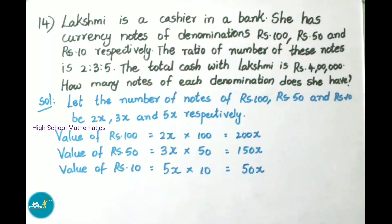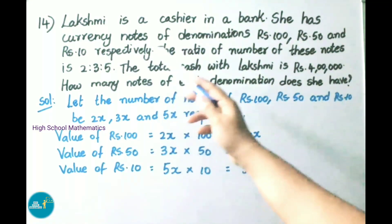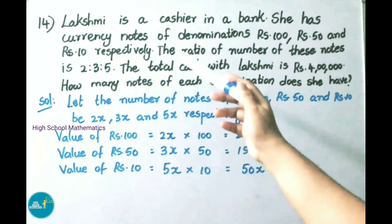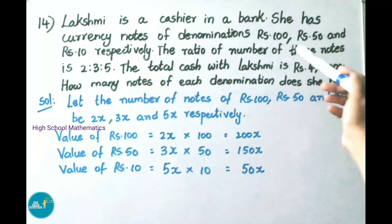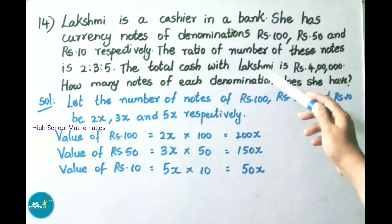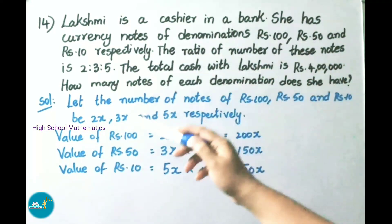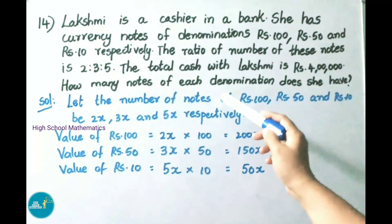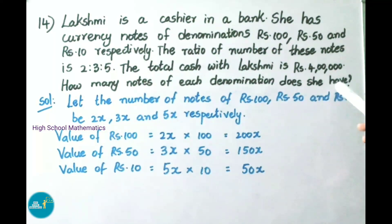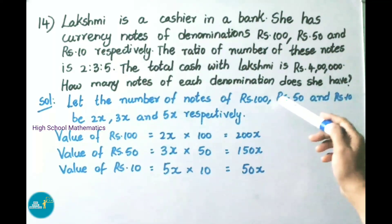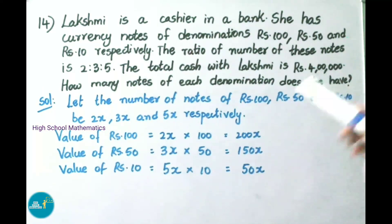See now question number 14. Lakshmi is a cashier in a bank. She has currency notes of denominations 100 rupees, 50 rupees and 10 rupees respectively. The ratio of number of these notes is 2:3:5. The total cash with Lakshmi is 4 lakh rupees. How many notes of each denomination does she have?